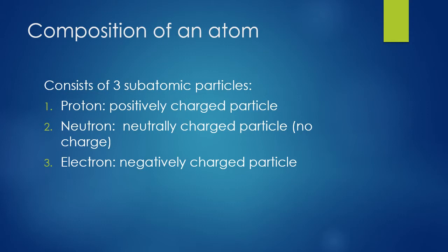Let's look at the composition of an atom. Atoms consist of three subatomic particles — they're called subatomic particles because they make up the atom. We have a proton, a neutron, and an electron. Protons are positively charged particles. Neutrons are neutral — hence the name neutron — meaning they have a charge of zero. Electrons are the negatively charged particles.